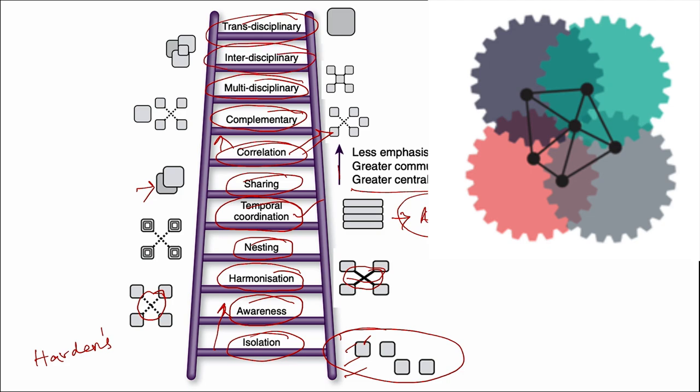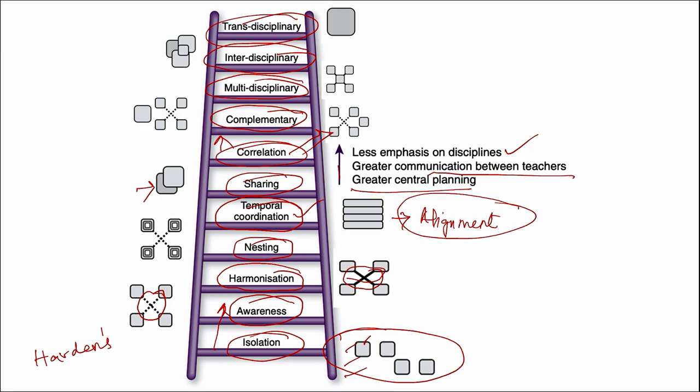As we climb up the ladder, we move on to the next step that is the interdisciplinary step. Here, subjects lose their identity in a new integrated program that involves the use of two or more academic disciplines simultaneously. This is a higher level of integration where the content of all or most subjects is combined into a new course. There is no subject demarcation at this level.